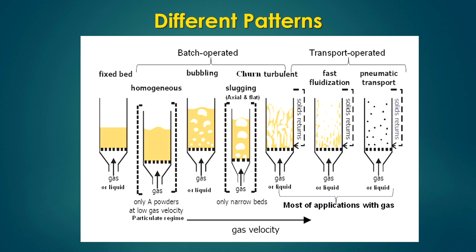As shown in this slide, we get a homogeneous flow pattern where particles just get suspended at a minimum gas or liquid velocity. Beyond that, if you increase the gas velocity you get different flow patterns like bubbling, churn turbulent, fast fluidization, and pneumatic fluidization. All these flow patterns depend on factors like particle size, particle size distribution, gas velocity, pressure, temperature, and geometrical conditions of the fluidized bed.